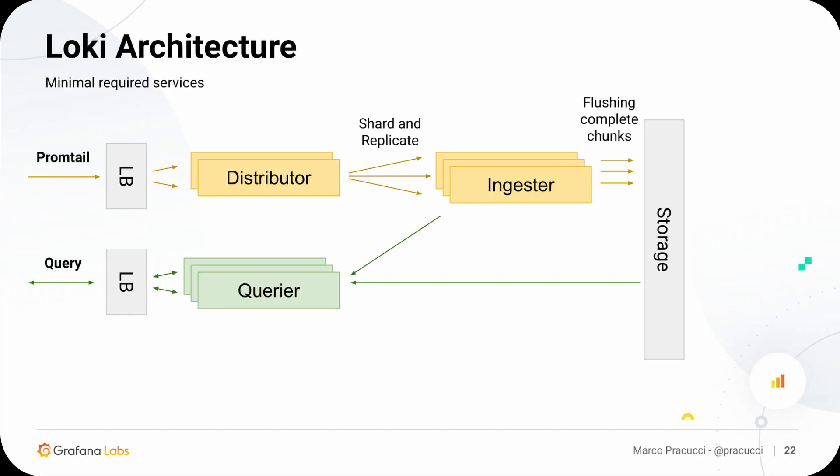On the read path, when you run a query using LogCLI or Grafana, the entry point is the querier. The querier, given the input time range and query expression, fetches the chunks for the log streams matching the label selector — both from the ingester and the shared storage. The ingester contains the latest received logs not yet flushed to storage, while the storage contains all historical logs. The querier receives the compressed chunks, decompresses them, and does a full scan to filter logs by the log line content, which is not indexed.